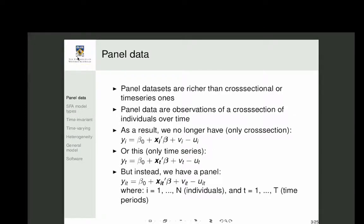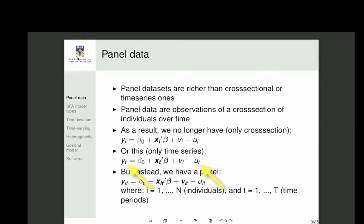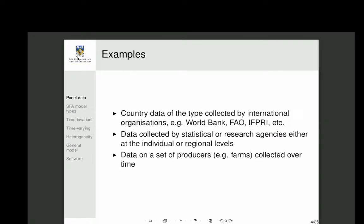Panel data consists of observations of a cross-section of individuals over time. Things vary across individuals but also over time. Unlike basic cross-sectional models where you have y_i as a function of x_i, v_i, and u_i, panel data combines both cross-section and time series. Your variables have two indices: i for individuals (1 to N) and t for time periods (1 to T), so you work with y_it, x_it, v_it, and u_it.